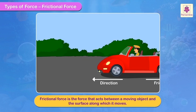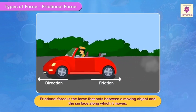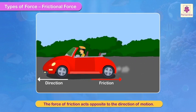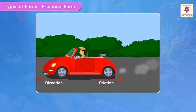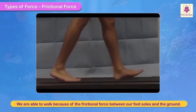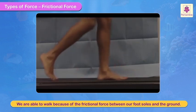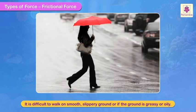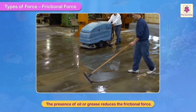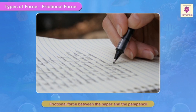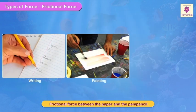The force of friction is the force that acts between a moving object and the surface along which it moves. The force of friction acts opposite to the direction of motion. It plays an important role in our daily lives. We are able to walk because of the frictional force between our foot soles and the ground. It is difficult to walk on smooth slippery ground or if the ground is greasy or oily. This is because the presence of oil or grease reduces the frictional force between the ground and our shoes. If there was no frictional force between the paper and the pen or pencil, we would not have been able to write, paint and draw anything.